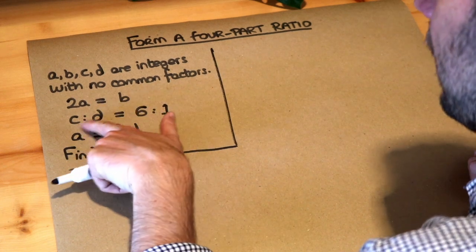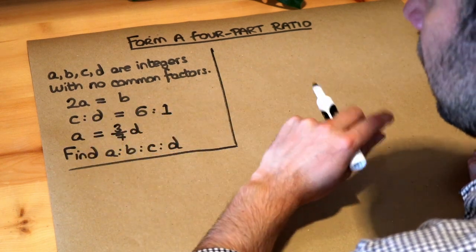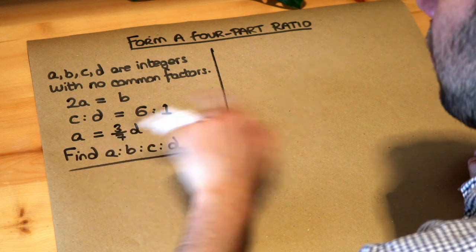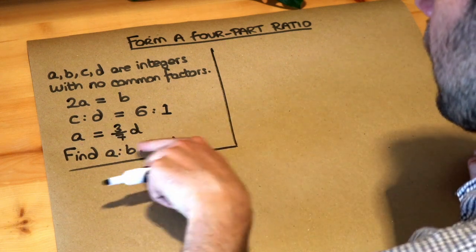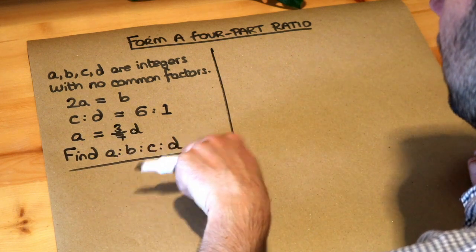2A is equal to B, C to D is 6 to 1 the ratio, and A is equal to three-sevenths of D. Find the ratio of A to B to C to D.